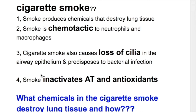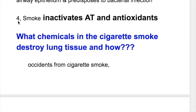What does cigarette smoke cause? Number one, cigarette smoke produces chemicals that destroy lung tissue. Number two, smoke is chemotactic to neutrophils and macrophages. Number three, smoke also causes loss of cilia in the airway epithelium and predisposes to bacterial infection. Number four, smoke inactivates antitrypsin and antioxidants.